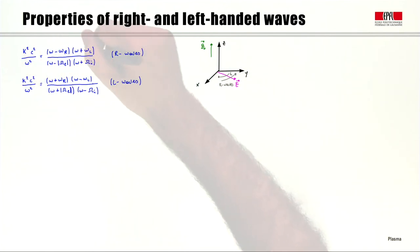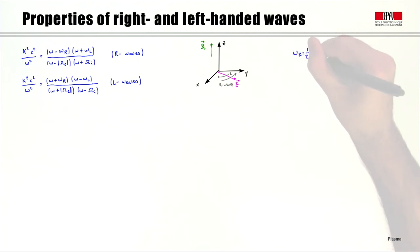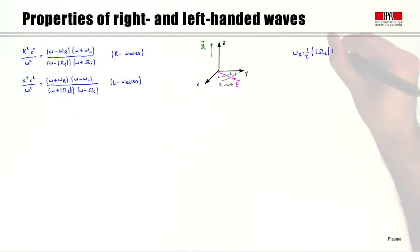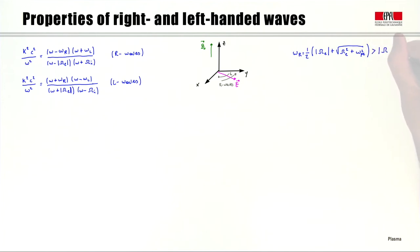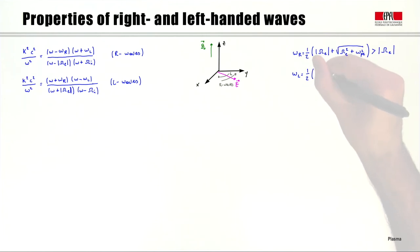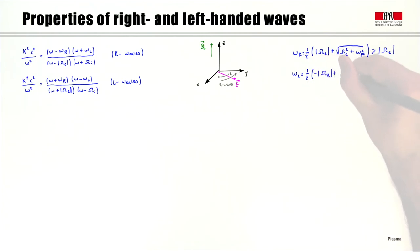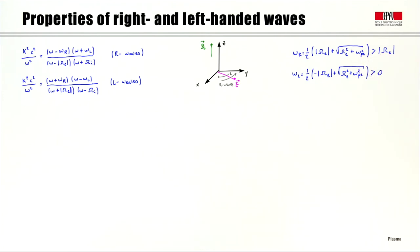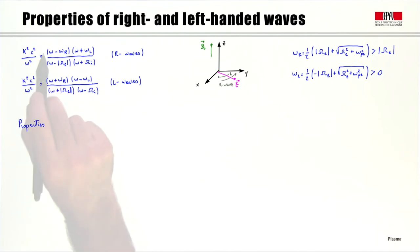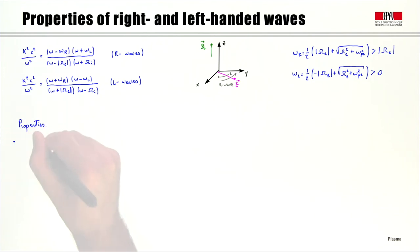The frequencies ωr and ωl are defined such that ωr equals one-half times |ωce| plus the square root of ωce² plus ωpe². This quantity is larger than the electron cyclotron frequency and larger than zero. In order for these waves to propagate, the expression k²c²/ω² must be positive.